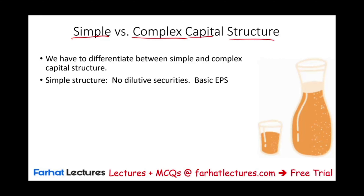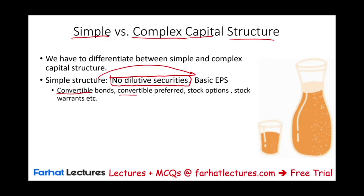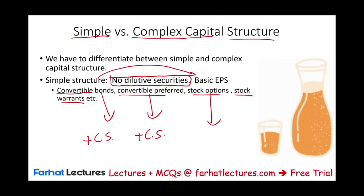A simple capital structure means all you have to do is compute basic EPS — this happens when you have no dilutive securities. What are dilutive securities? We talked about them in a prior session, but let's list them: convertible bonds, convertible preferred stock, stock options, and stock warrants. Convertible bonds can be converted into more common stock, convertible preferred can be converted into more common stock, stock options if exercised will increase your common stock, and stock warrants lead to more common stock.